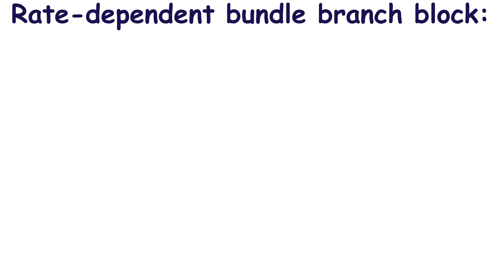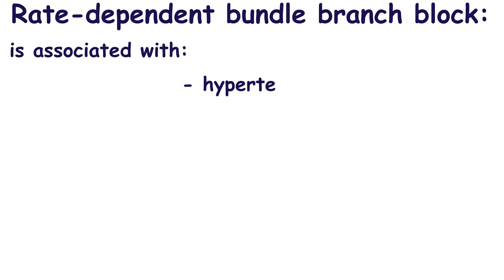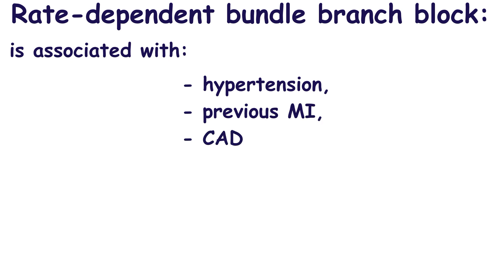Rate dependent bundle branch block is associated with chronic hypertension, previous myocardial infarction, coronary artery disease, and myocarditis. Rate dependent bundle branch block may be the first sign of coronary artery disease.